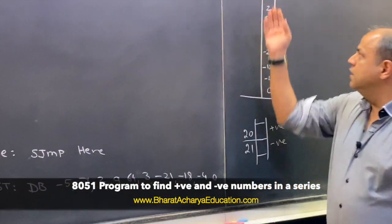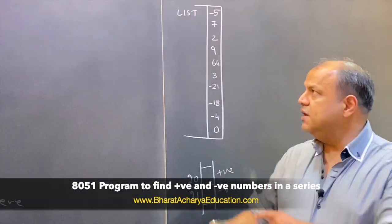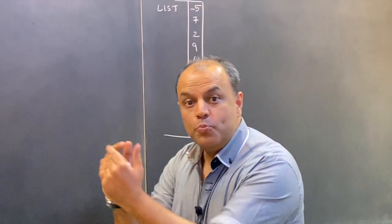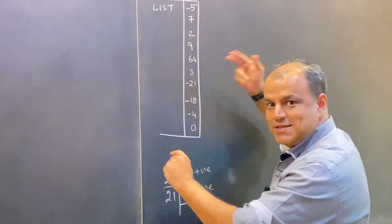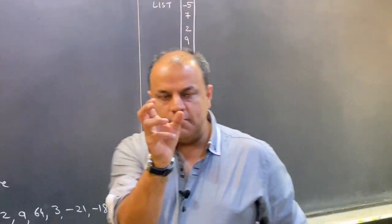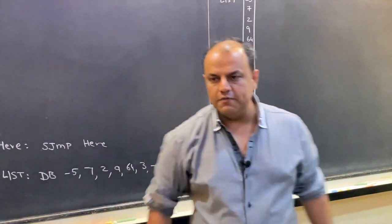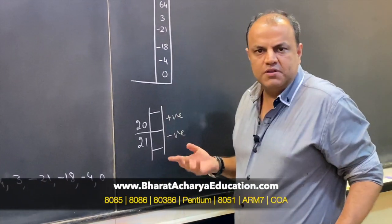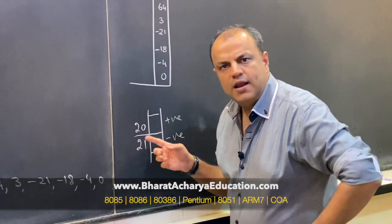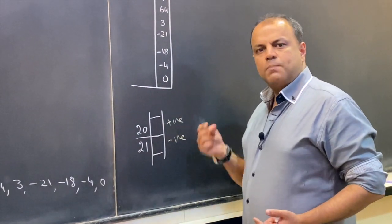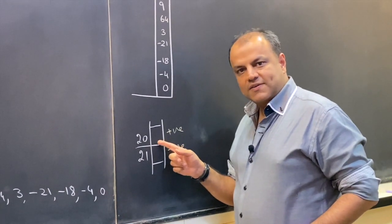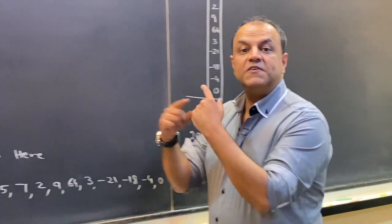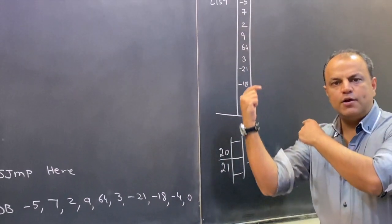This list is stored in the memory. First we'll create a pointer that points to this location. We'll create a loop count. We will create a loop. In the loop we will access each element. Once you get the element in your hand you will evaluate whether it's positive or negative. We will maintain two counters at any location. Since it's not given in the question, location is your choice. Let's say location 20 and 21. Every time we encounter a positive number we will increment this counter. Every time we get a negative number we'll increment this counter.